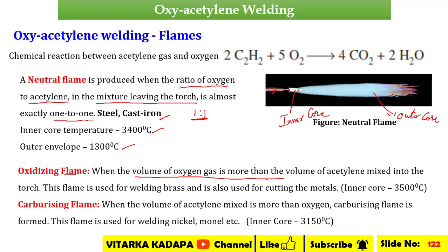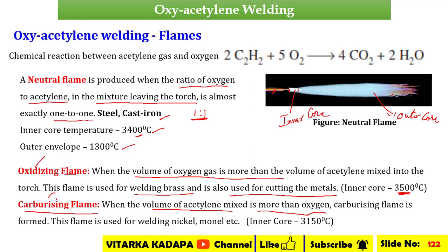Next is the oxidizing flame. In the oxidizing flame, the volume of oxygen gas is more than the volume of acetylene mixed in the torch. This flame is used for welding of brass and also for cutting of various metals. The inner core temperature is 3500 degrees Celsius. These temperature values are frequently asked in examinations — for example, the inner core temperature of neutral, oxidizing, and carburizing flames. In the carburizing flame, the volume of acetylene is more than the oxygen.